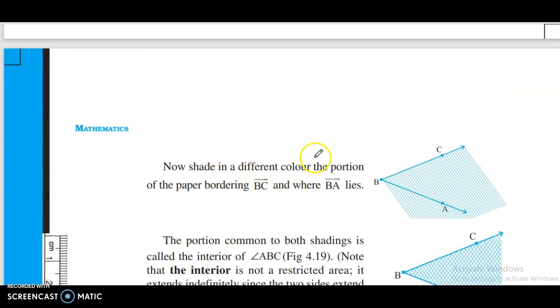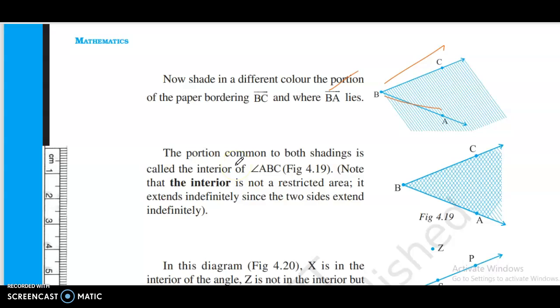Now shade in a different color the portion of the paper bordering BC where BA lies. The portion common to both shadings is called the interior of angle ABC, figure 4.19. Note that the interior is not a restricted area; it extends indefinitely since the two rays extend indefinitely.